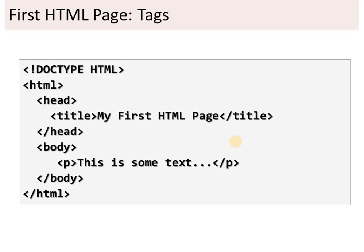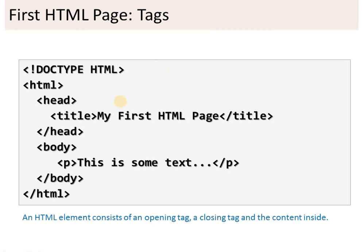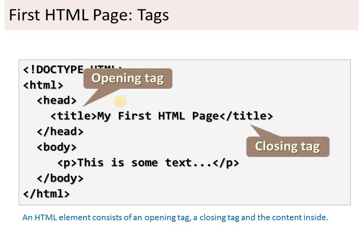Here is the simplest code to represent a first HTML page. An HTML element consists of an opening tag, a closing tag, and content inside. Whenever you use a tag, its purpose is to display something on your web page, and whatever you are displaying is the content. For example, this is the title tag, which specifies the title of my web page — this is the opening tag and this is the closing tag.